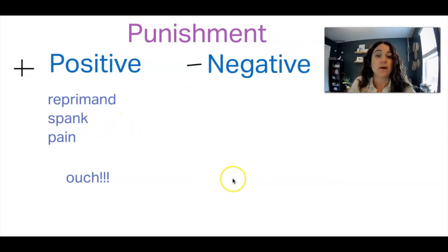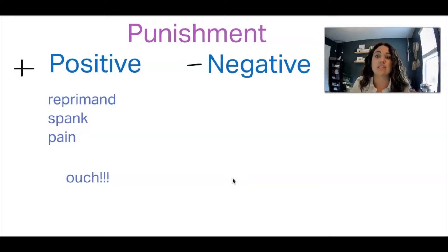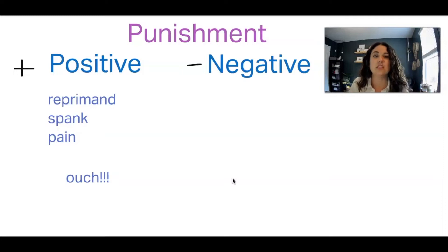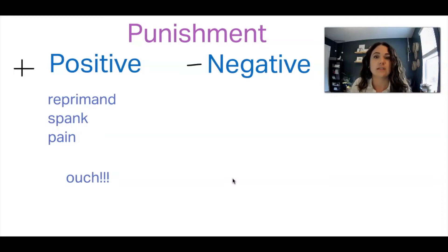We know that punishment is any instance where something is added or taken away that decreases the future frequency of a behavior. So if the behavior is decreasing or not going to happen later on because of an event that occurred, it's going to be punishment.